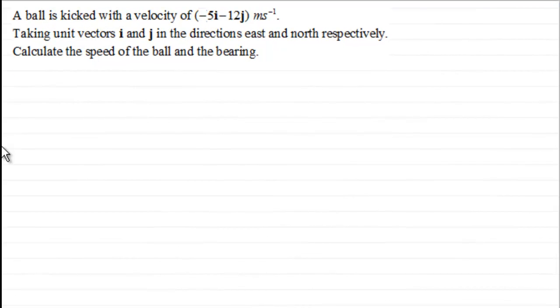Hi. What I've got here is an example for you to try. I'm assuming you've watched the previous video in my series on velocity vectors. In it I showed you, given a velocity vector where we had i and j representing directions in the east and north respectively, that we could calculate the speed and the bearing.